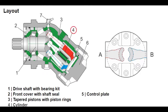Due to the bent axis design, torque is produced directly on the driveshaft. The pistons exert minimal lateral force on the cylinder, which reduces wear, increases efficiency, and improves starting torque. The port plate holds the rotary group in the housing and passes hydraulic fluid through two channels.